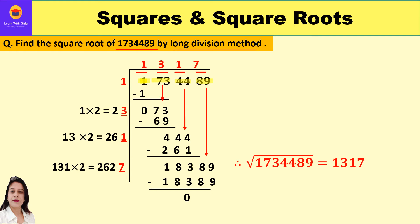We think of the largest number whose square is equal to or less than 1. Naturally we keep 1 as both the divisor and quotient. 1×1=1, and the difference is 0. We cannot use 2 because 2×2=4, which is more than 1. So the difference is 0 and we bring down the next period, which is 73.